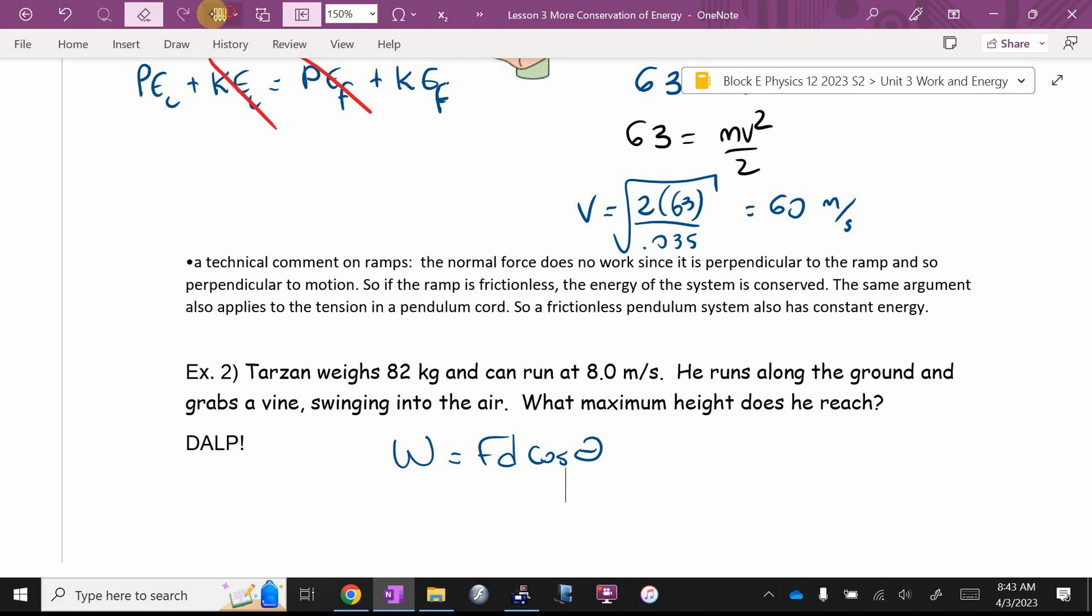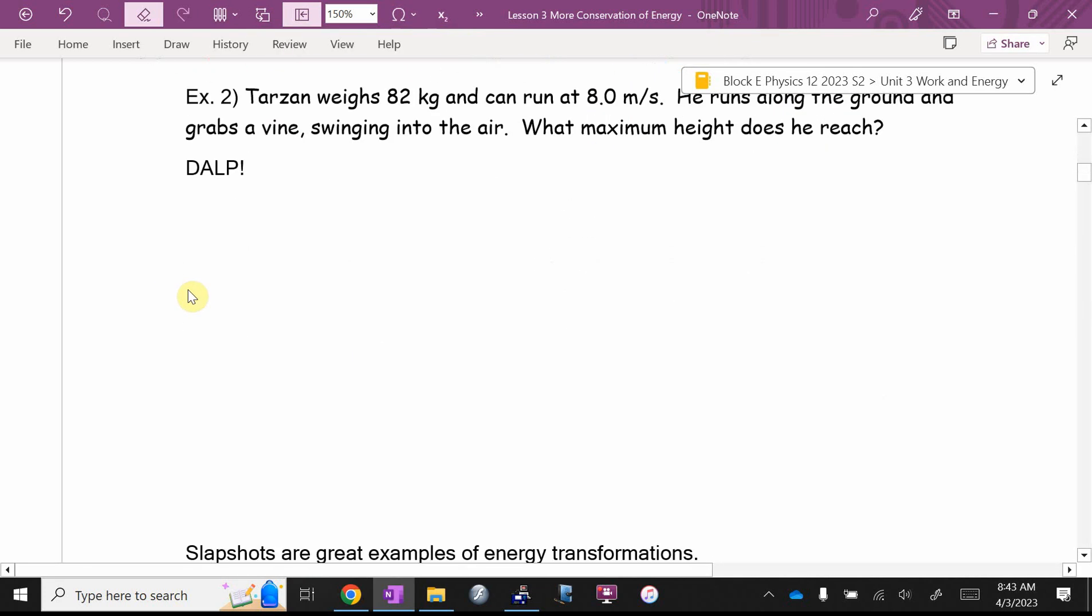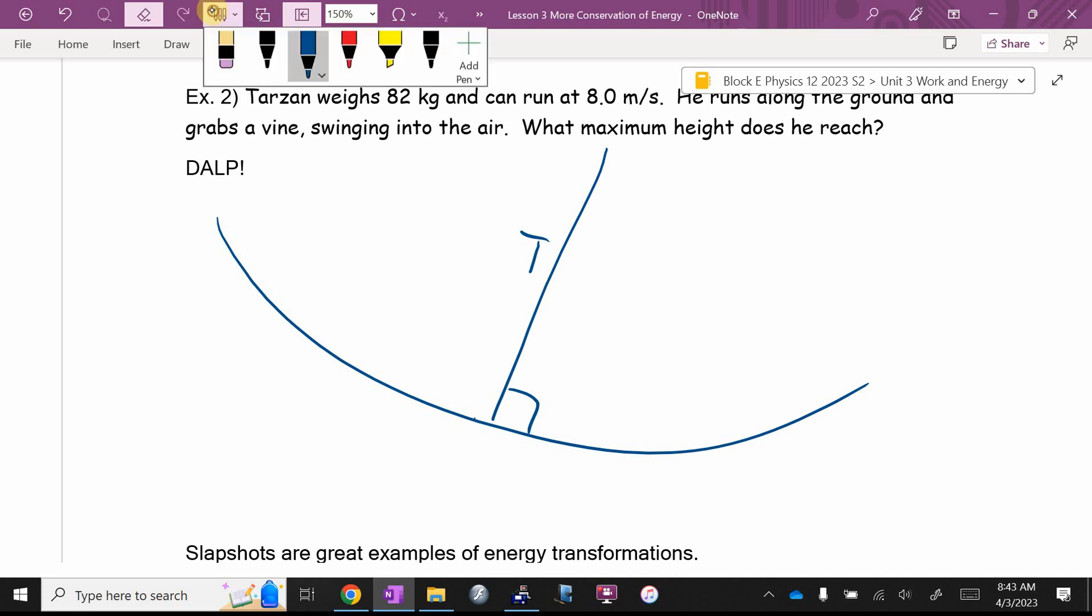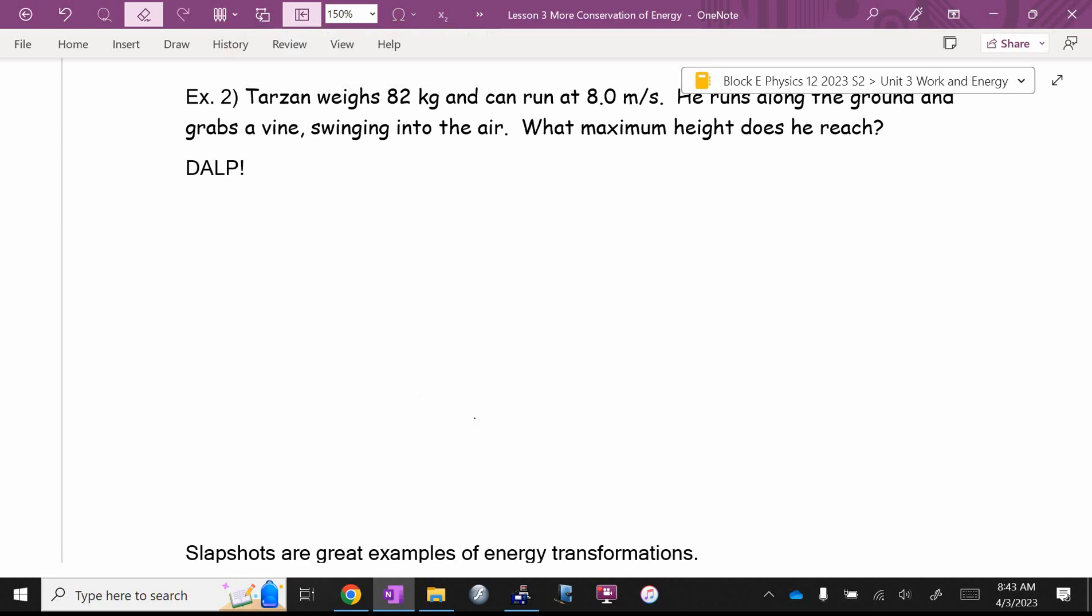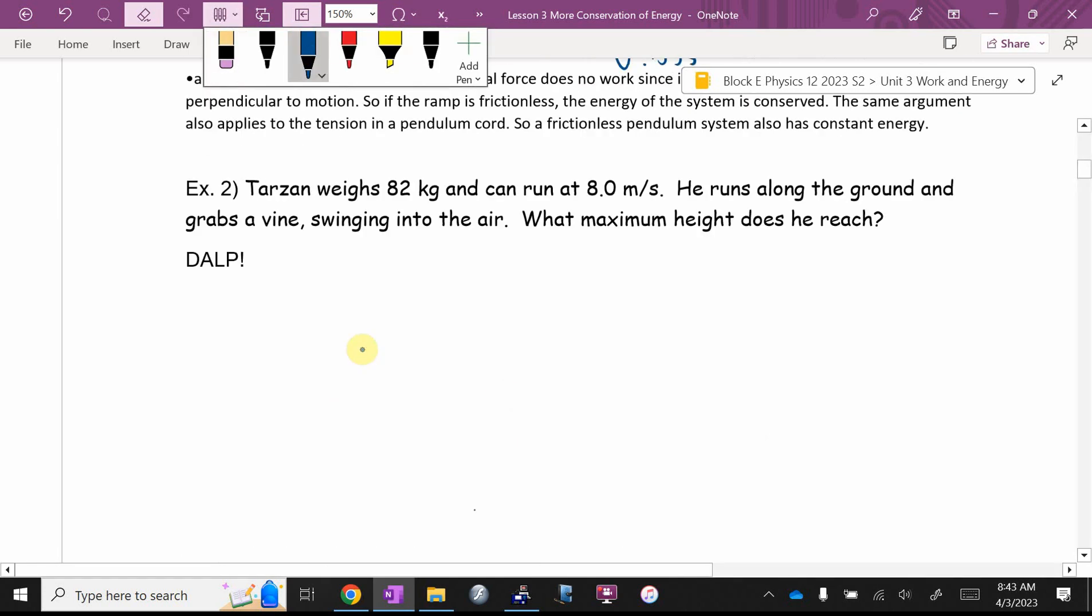Also, for a rope, you can make the same argument for tension. So if you have a rope, don't write this down, just watch. When it's swinging, if that's the rope, let's say right there, tension is always at right angles to the arc of the rope, which means a rope is also a pretty good example of conservation of energy. So let's try this. Tarzan weighs 82 kilograms and can run at eight meters per second. He runs along the ground and grabs the vine, swinging into the air. What maximum height does he reach? We're going to dulp.